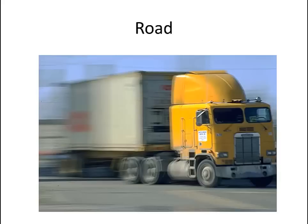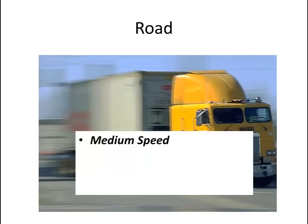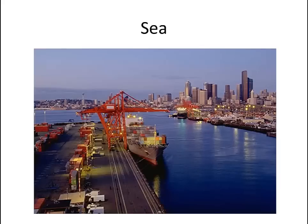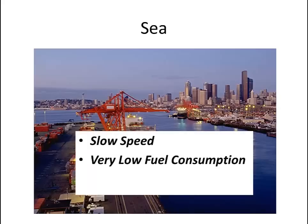Road transportation is the most common mode of transportation by count of individual shipments. It is less expensive than air, but it is not the cheapest transportation mode. It is characterized by medium average highway speeds, moderate but still significant fuel consumption, and is definitely a point-to-point delivery mode. Transportation by ship or by river barge is the least expensive of all transportation modes. However, transportation by water is very slow, typically 10 to 15 miles per hour. On the positive side, water transportation requires very little fuel. It can occasionally be point-to-point, but usually requires connections with other transportation modes.